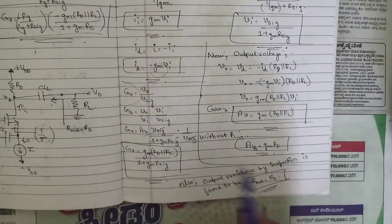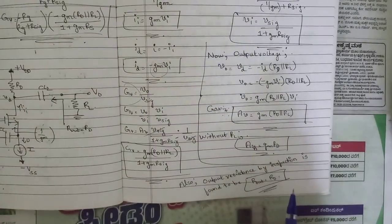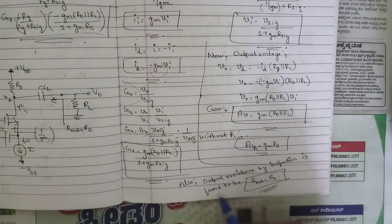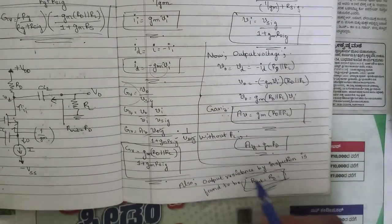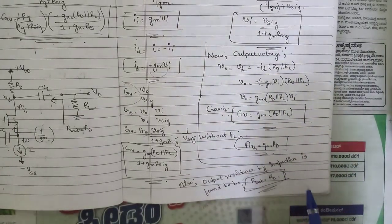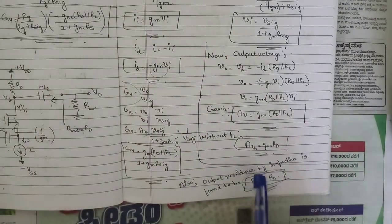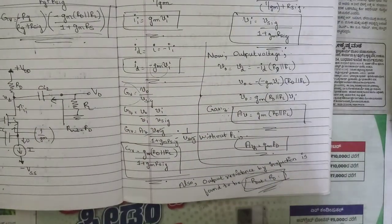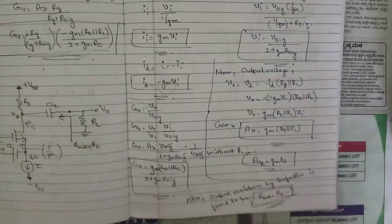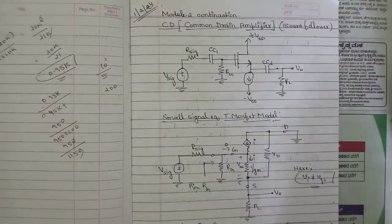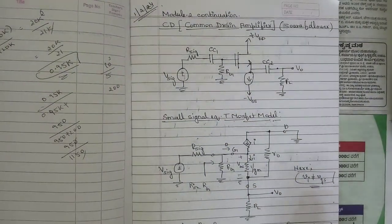For the common gate amplifier, the output resistance by inspection is found to be R_out = RD, meaning the output resistance equals the drain resistance.